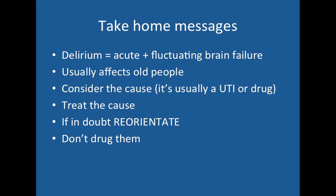The take-home messages are that delirium is acute and fluctuating. Some call it acute brain failure, in the same way a patient can get an acute kidney injury. Delirium isn't a diagnosis in itself — it's how a patient presents when their brain is failing for whatever reason. It usually affects older people and it's important to consider the cause and treat it. In a question, if reorientate the patient is an option, it's probably the right answer.